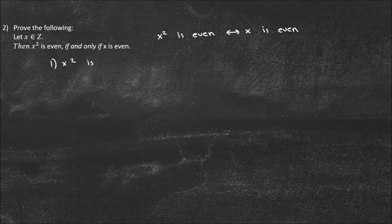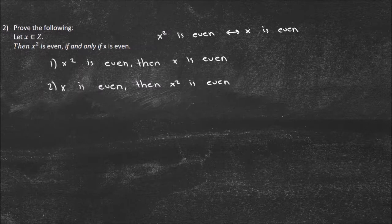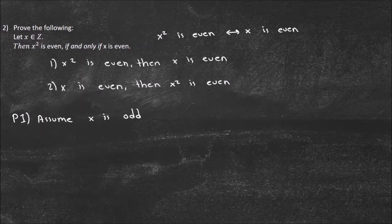So we're going to have two things to prove. First: if X squared is even, then X is even. For part one, we're going to do this by contraposition. Assume X is odd. Then we're going to try to show that X squared must be odd as well.